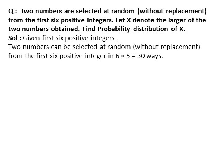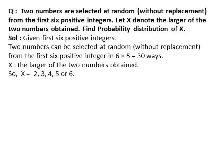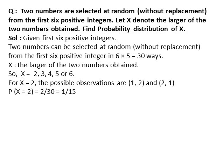The first number can be selected in 6 ways. As the selected number is not replaced, the second number can be selected in 5 ways. Therefore, the total number of ways in which two numbers can be selected is 6 × 5 = 30. x is the larger of the two numbers obtained, so x can equal 2, 3, 4, 5, or 6.